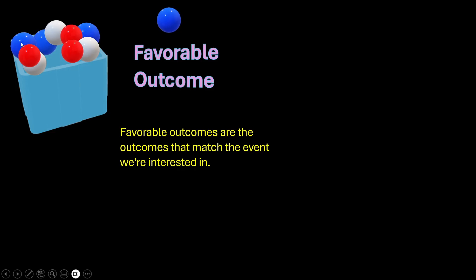Favorable outcomes are the outcomes that match the event we are interested in. A favorable outcome is picking any of the blue balls. So, in this case, the number of favorable outcomes is 4.